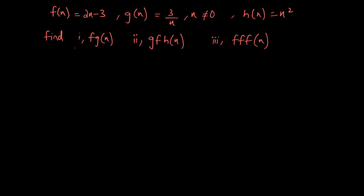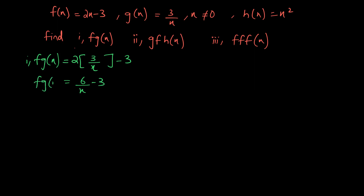Here is another example in which functions f(x), g(x), and h(x) are given. In the first part we are asked to evaluate f∘g(x). This means g(x) is being inserted into function f as the input. When you insert function g and simplify, you get 6 over (x - 3) as your composite function f∘g(x).